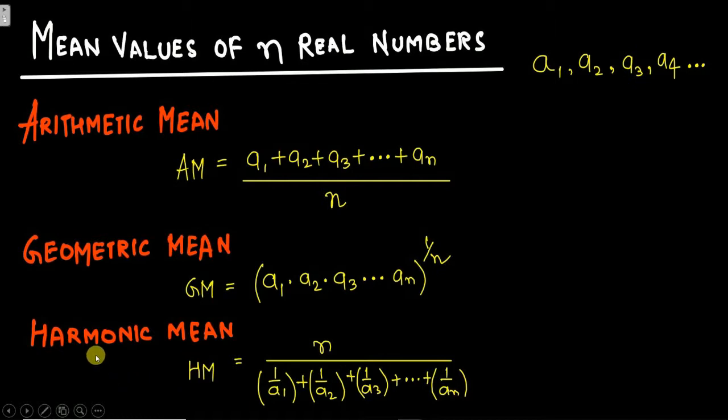Now harmonic mean. Harmonic mean is nothing but a formula modification of the arithmetic mean formula. You need to simply take the reciprocal of this. Here we have a denominator n. So here this n will come in the numerator and a1 plus a2 plus a3 is in the numerator. You need to bring this in denominator and take the reciprocal of these. So three types of means we have: arithmetic mean, geometric mean and harmonic mean.